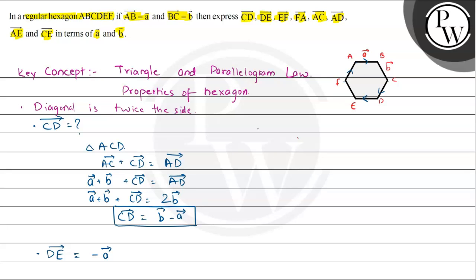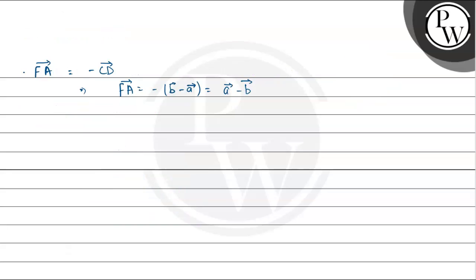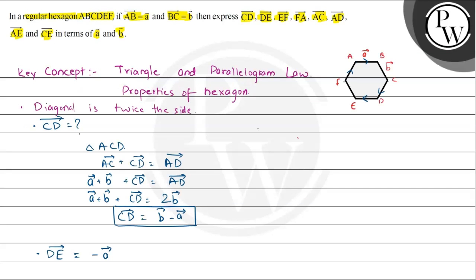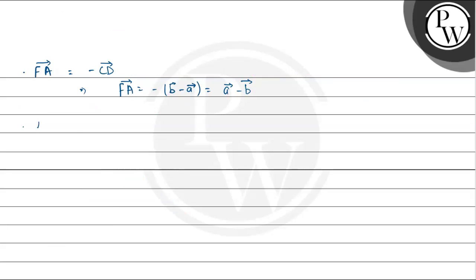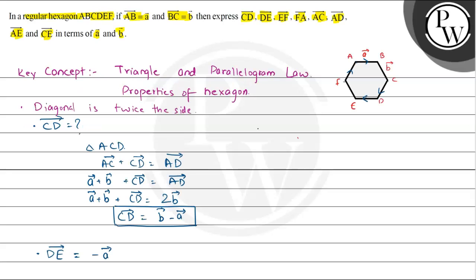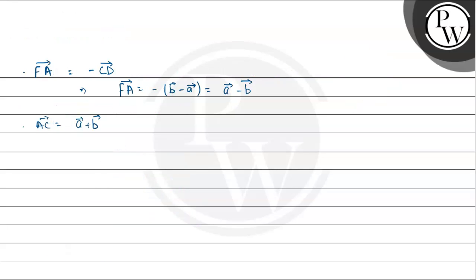Next we evaluate AC vector. We had already evaluated AC in the first part: AC vector = a vector + b vector, because in a triangle, if two sides are a and b, the third side joining the other two vertices is the sum of those two sides. Similarly, AD vector was already evaluated to be 2 times b vector, so AD vector = 2b vector.